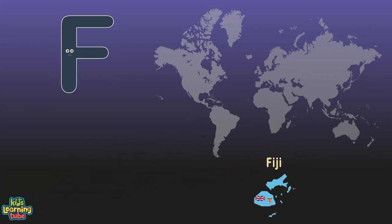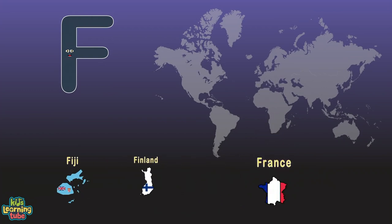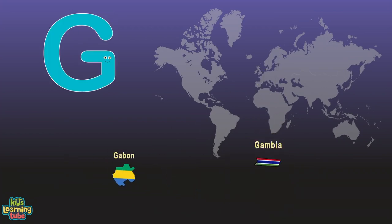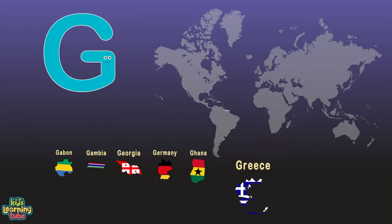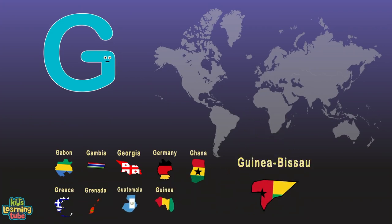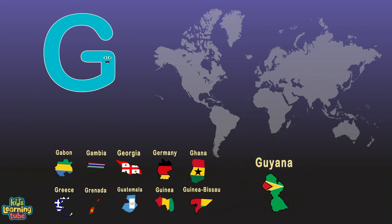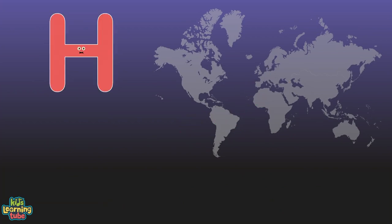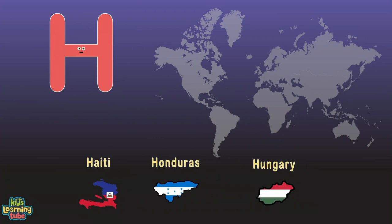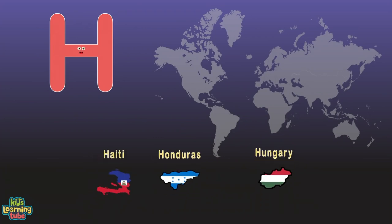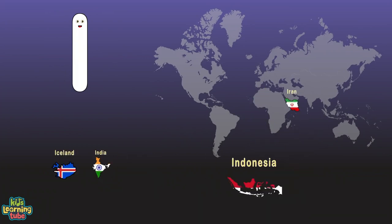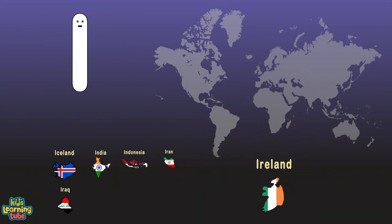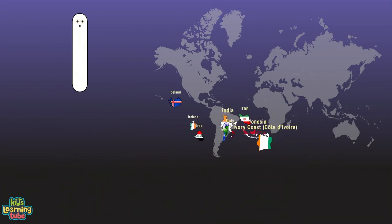F is for Fiji, Finland, and France. G is for Gabon, Gambia, Georgia, and Germany. Ghana, Greece, Grenada, Guatemala, Guinea, Guinea-Bissau, and Guyana. H is for Haiti, Honduras, and Hungary. I is for Iceland, India, Indonesia, Iran, Iraq, Ireland, Israel, Italy, and Ivory Coast. J is for Jamaica, Japan, and Jordan. K is Kazakhstan, Kenya, Kiribati, Kuwait, and Kyrgyzstan.